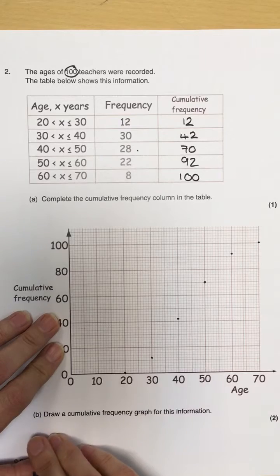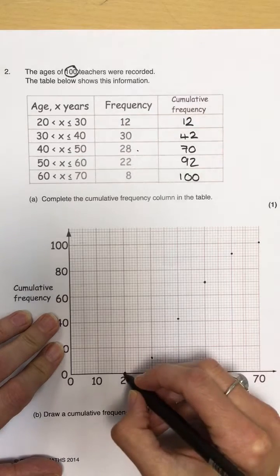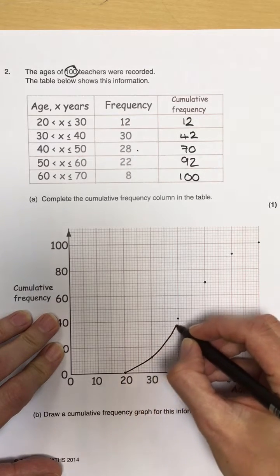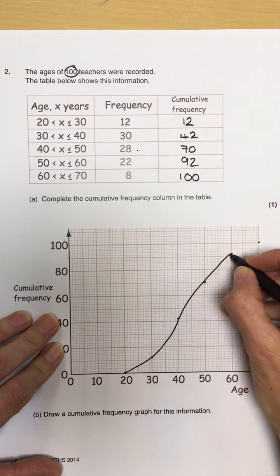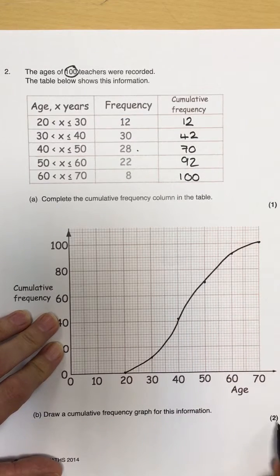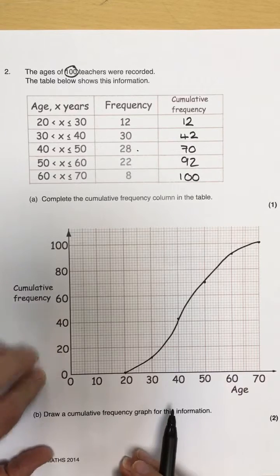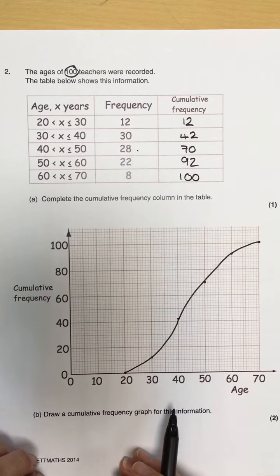Now, we're not using a ruler for this. We have to put a smooth curve through these points to gain your two marks for the cumulative frequency graph.